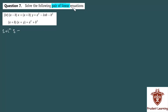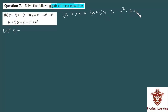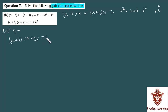Solve the following pair of linear equations. The first equation is: (a minus b) into x plus (a plus b) into y is equal to a squared minus 2ab minus b squared. The second equation is: (a plus b) into (x plus y) is equal to a squared plus b squared.